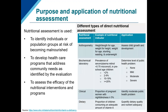When considering assessments of individuals to understand their well-being and that of the population they represent, we have different options. In general, there's anthropometry — measurement of the body — biochemical indicators or biomarkers, clinical assessments, and dietary assessments. You can see that this spells A-B-C-D. So sometimes to help you remember, you can think of A-B-C-D to remember these different kinds of nutritional assessment.